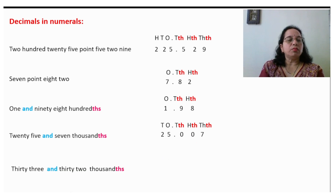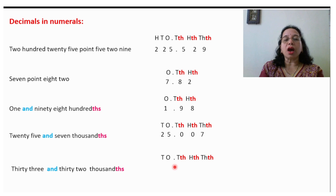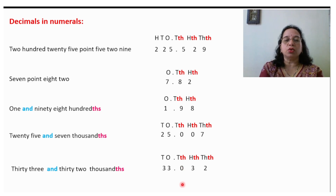Take one more example: 33 and 32 thousandths. Write down the places up to thousandths. 33 comes in the whole part, then the decimal point. 32 thousandths means the last two places are 32, and since there is no number in the tenths place, we write 0 there. So the decimal is 33.032.